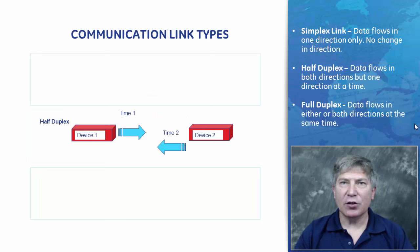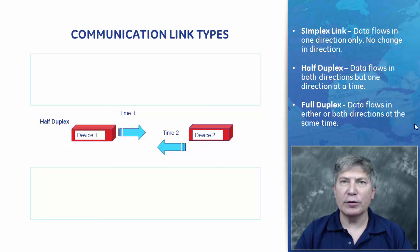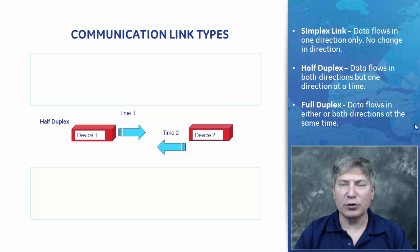Next, we have half-duplex, where the communication can flow in both directions, but only one device can talk at any one time. A number of connected devices have to take turns transmitting data. This is a fairly common mode of operation where there is only a single network medium between devices. An example of this would be a pair of two-way radios where one person can speak at any given time.